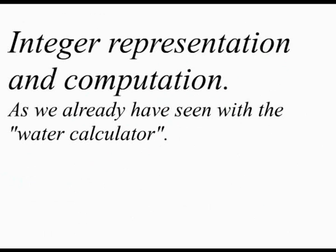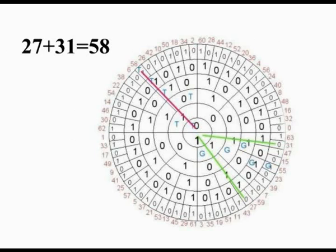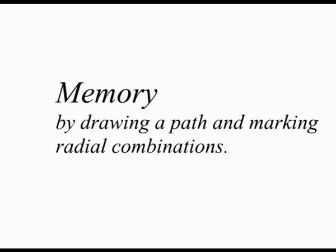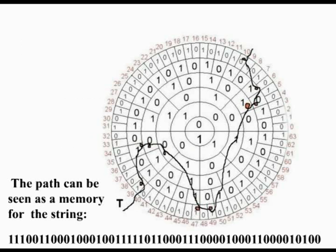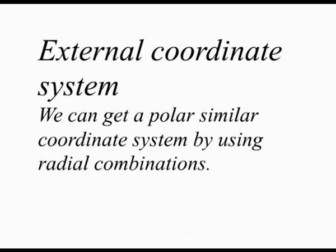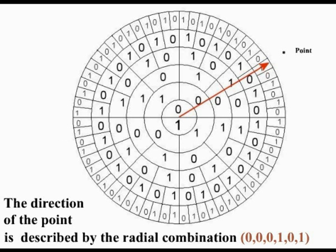Integral representation and computation, as we already have seen in the water calculator. Adding 31 to 27 equals 58, which is represented by the red line. Memory: by drawing a path and marking radial combinations, the path can be seen as a memory for a string. External coordinate system: we can get a polar or similar coordinate system by using radial combinations. The direction of the point is described by the radial combination 0, 0, 1, 0, 1.